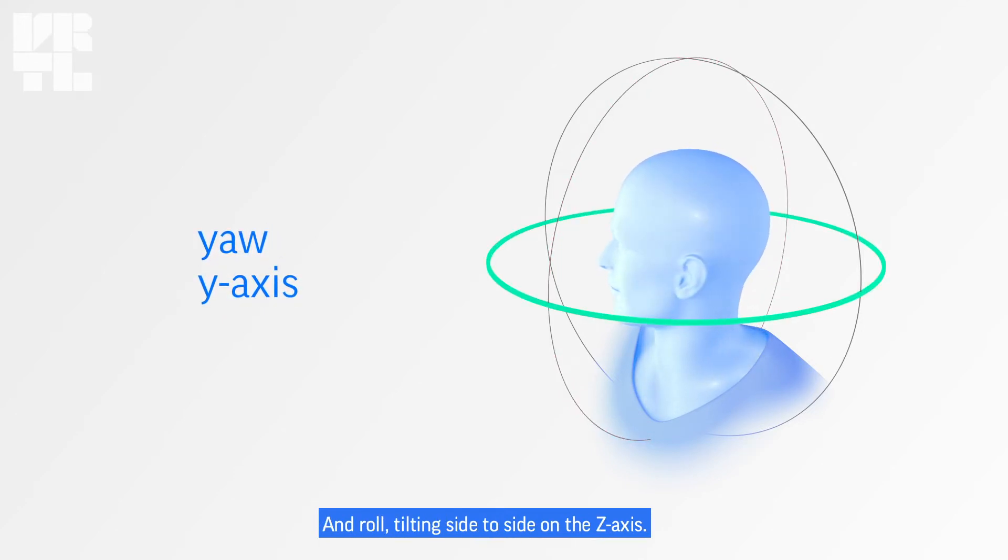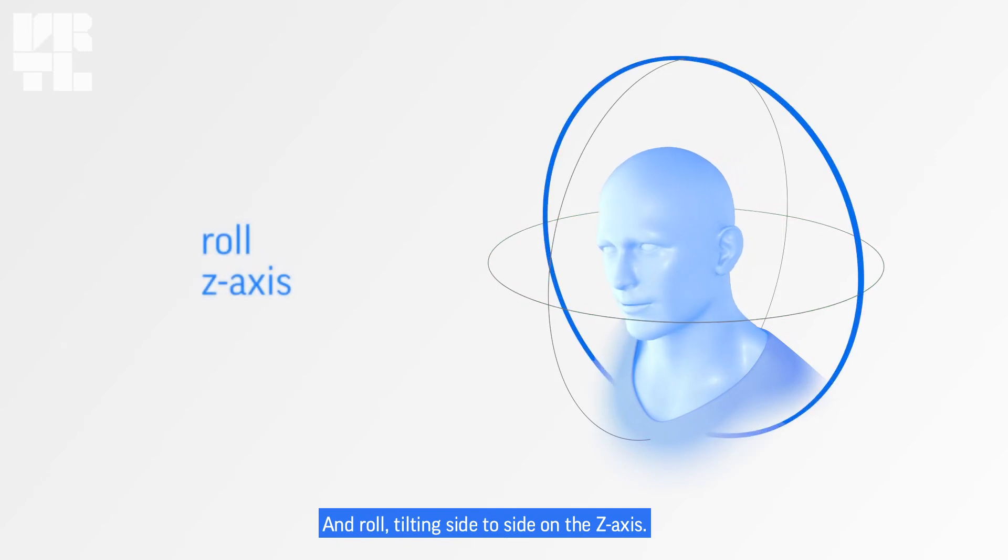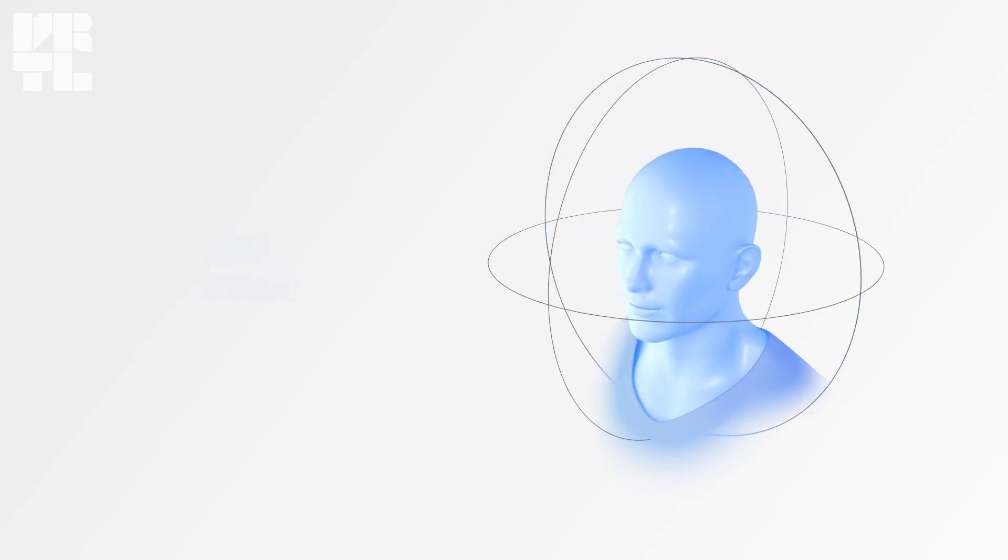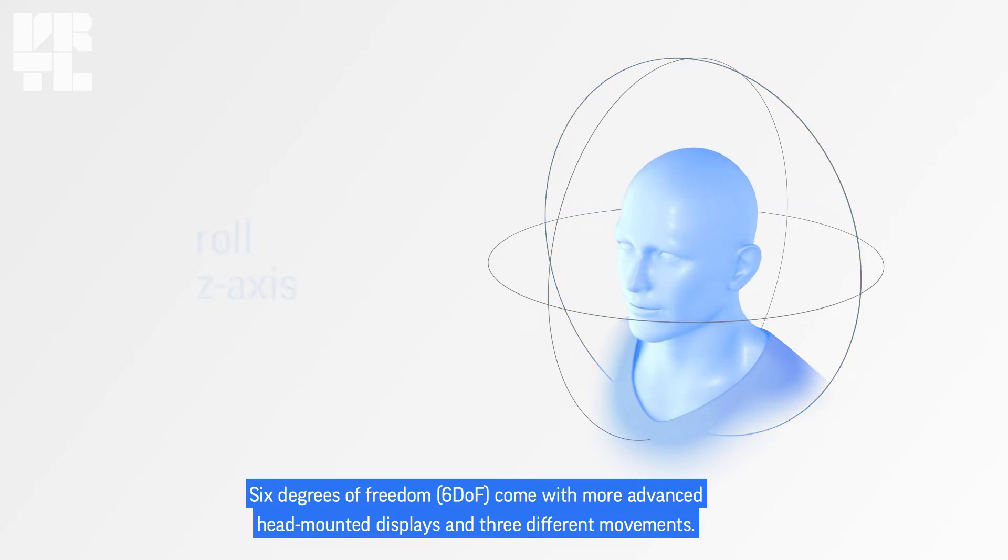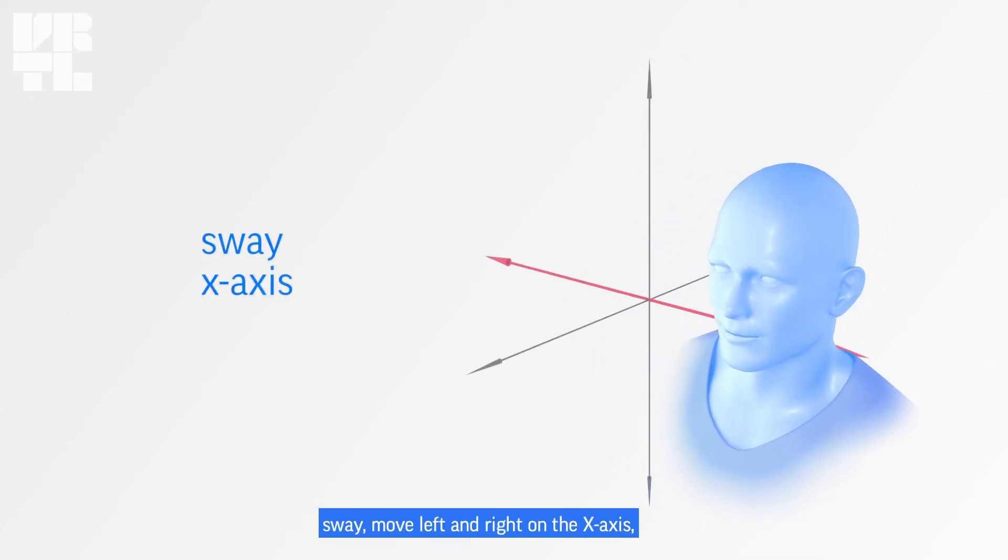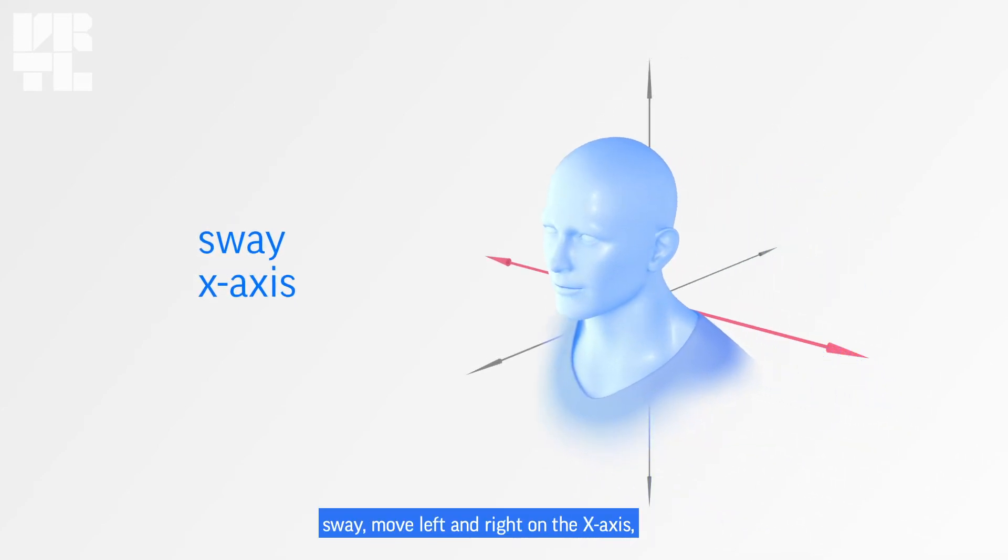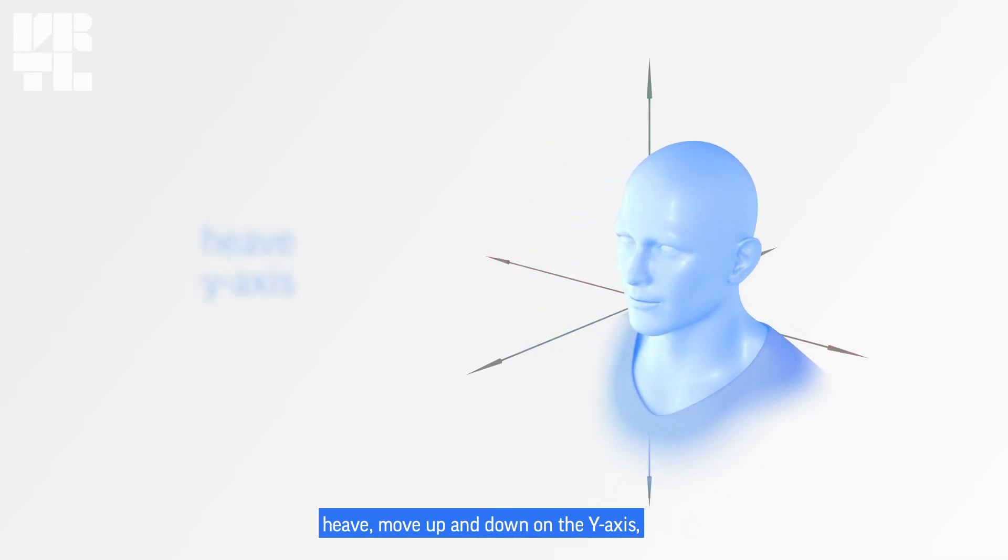Six degrees of freedom, 6DOF, come with more advanced head mounted displays and add three different movements: sway, moving left and right on the x-axis, and heave, moving up and down on the y-axis.